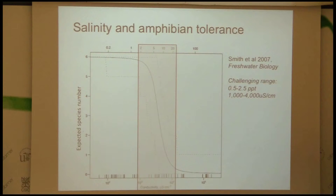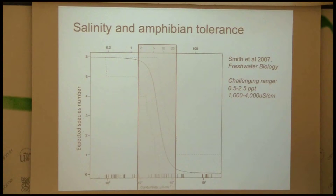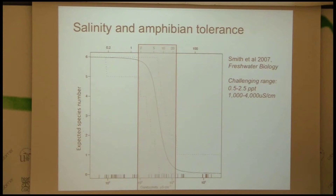Just to put it in perspective, this is 0.5 to 2.5 parts per thousand, which corresponds to about 1,000 to 4,000 microsiemens — a measure of conductivity in general. That includes more than just sodium and chloride, but for many systems those are the dominant solutes. Few species can tolerate these relatively high levels — and compared to seawater, this is much lower than what people think about.